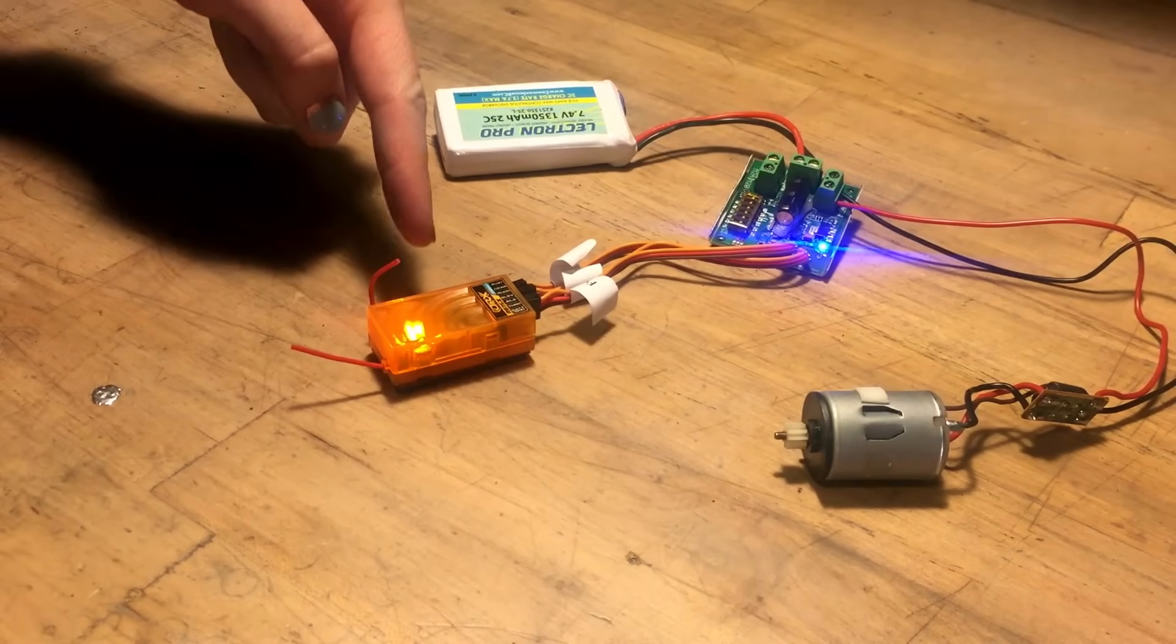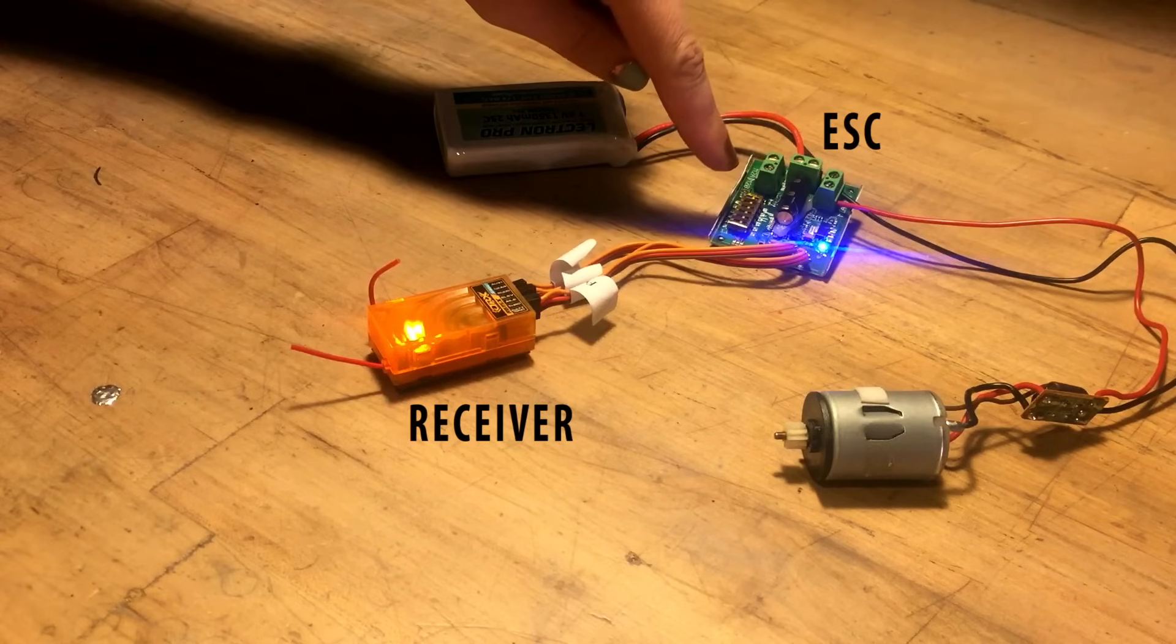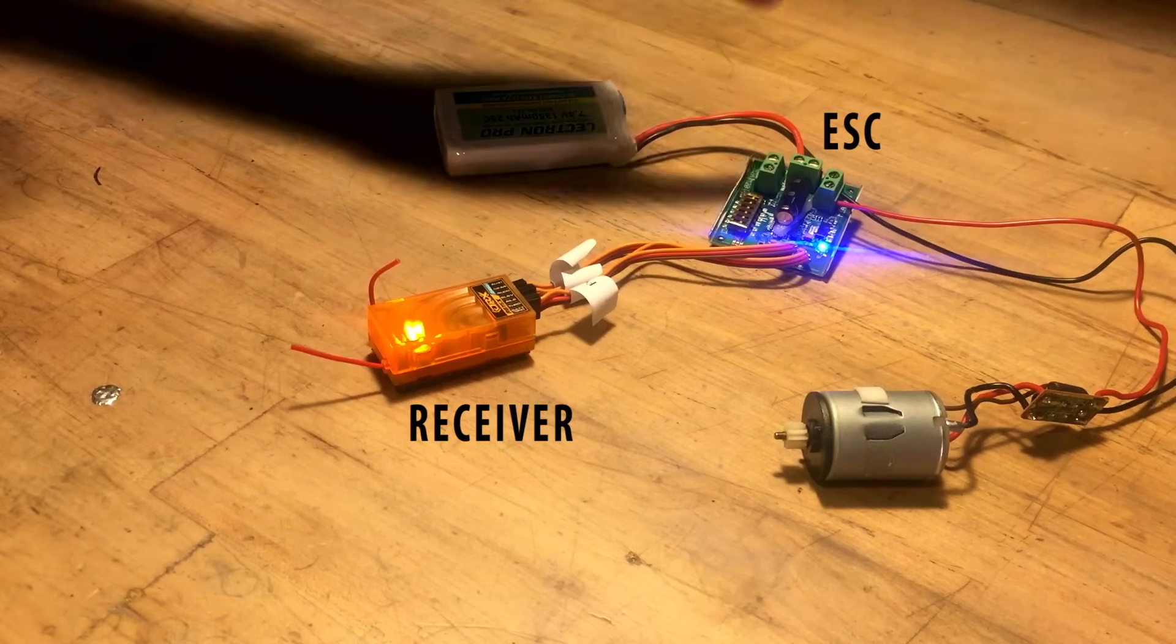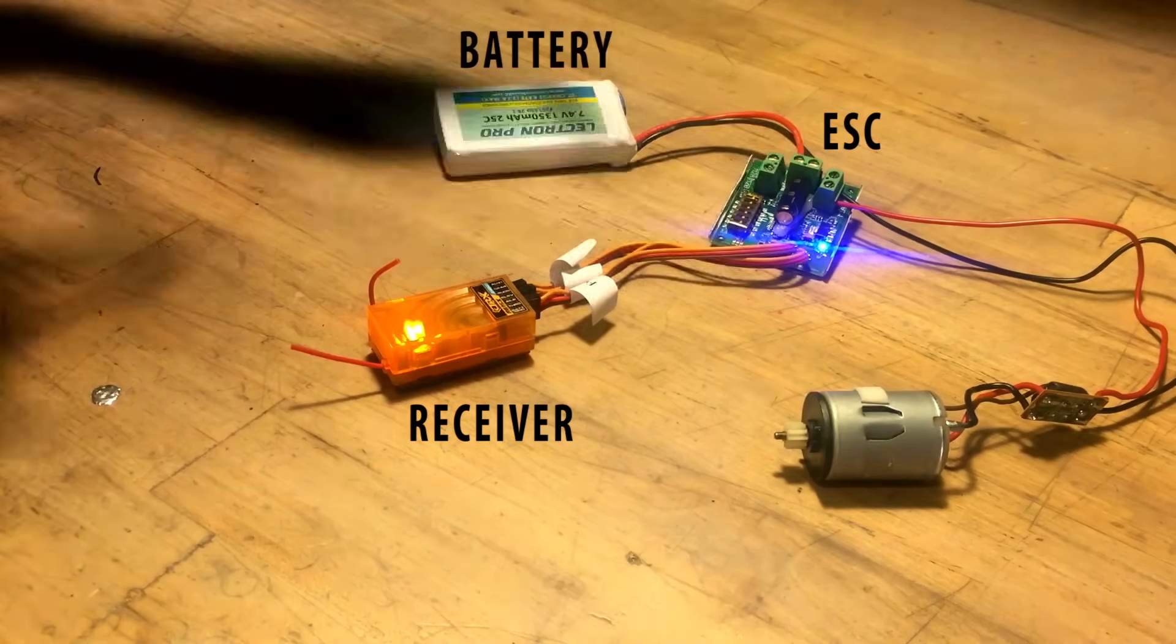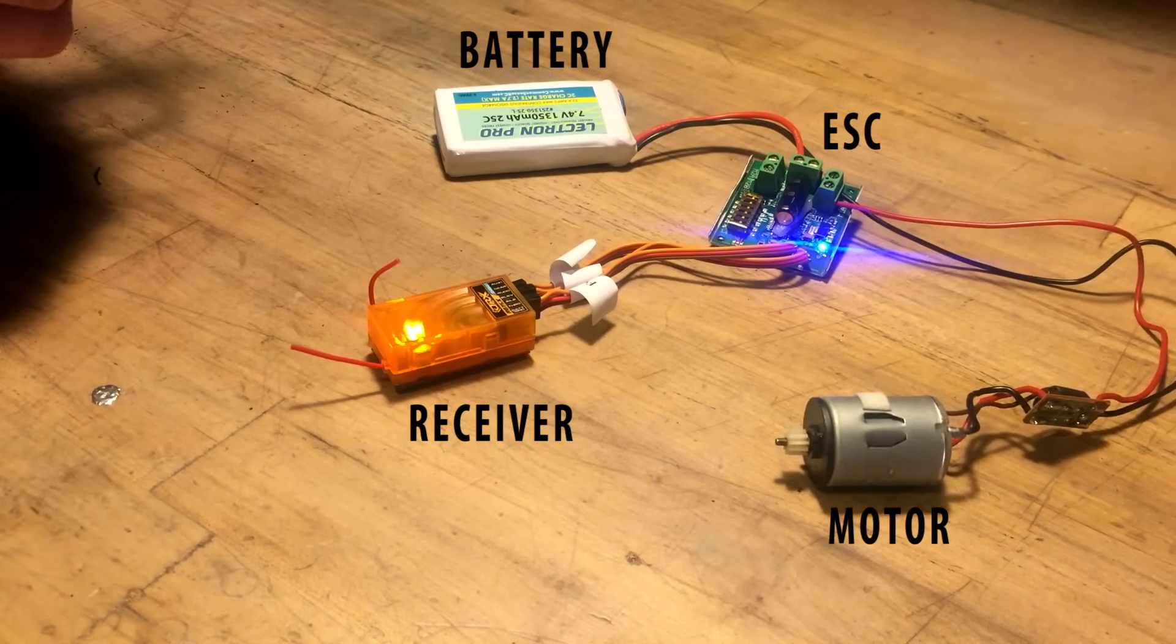So the signal is getting picked up here, goes to the speed control, and it's taking the power from the battery and putting it into the motor whenever I tell it to.